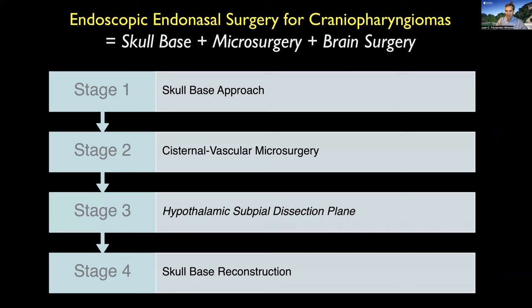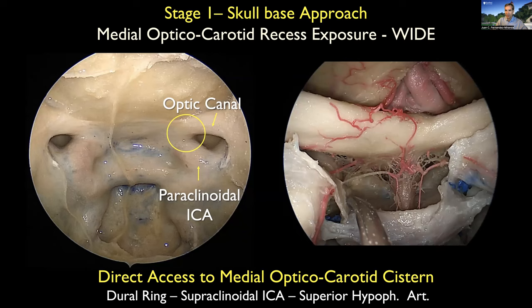For the skull-base approach, it is very important to understand the concept of the medial optic carotid recess. We need to do a wide exposure involving removal of all the bone around the optic canal and paraclinoid ICA. My reference for this exposure is the optic strut. I remove the bone all the way so I have good exposure of the optic nerve and carotid. When I open the dura towards the distal ring and towards the falciform ligament, I can see the optic nerve and carotid artery with the hypophysial branches early in the operation, with no obstruction.